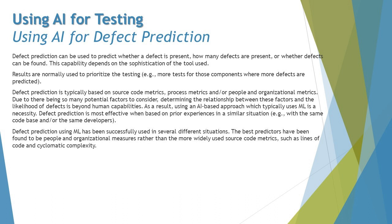Defect prediction using ML models has been successfully used in several different situations. Interestingly, the best predictors have been found to be people and organizational measures rather than the more widely used source code metrics such as lines of code and cyclomatic complexity.